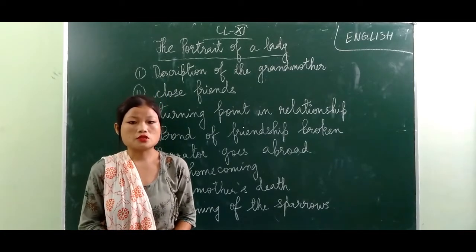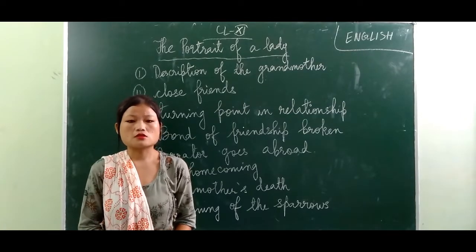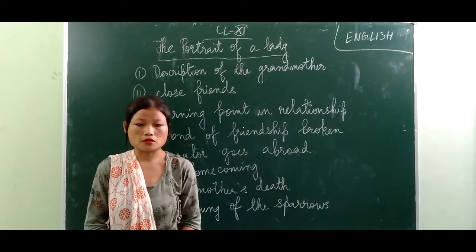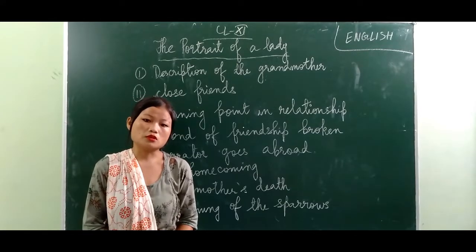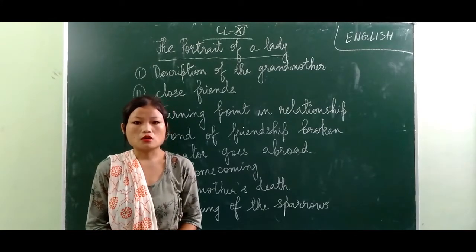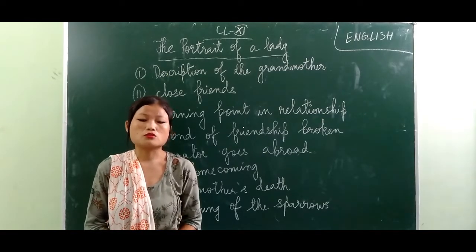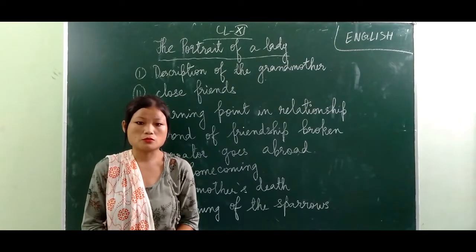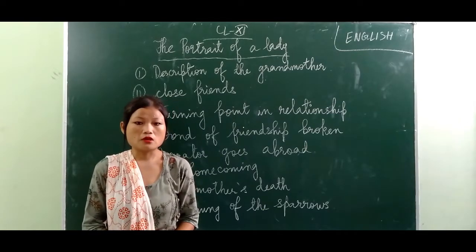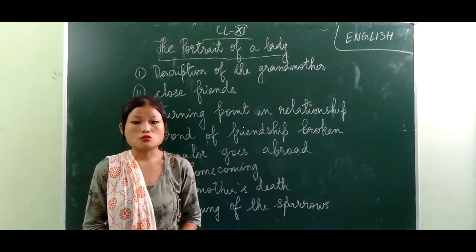Khushwant Singh gives a description of his grandmother. He says that his grandmother, like everybody's grandmother, was a very old lady. As she was very old, her face was full of wrinkles and she looked pale, and by seeing her it was difficult for him to believe that she must have once been young and pretty.